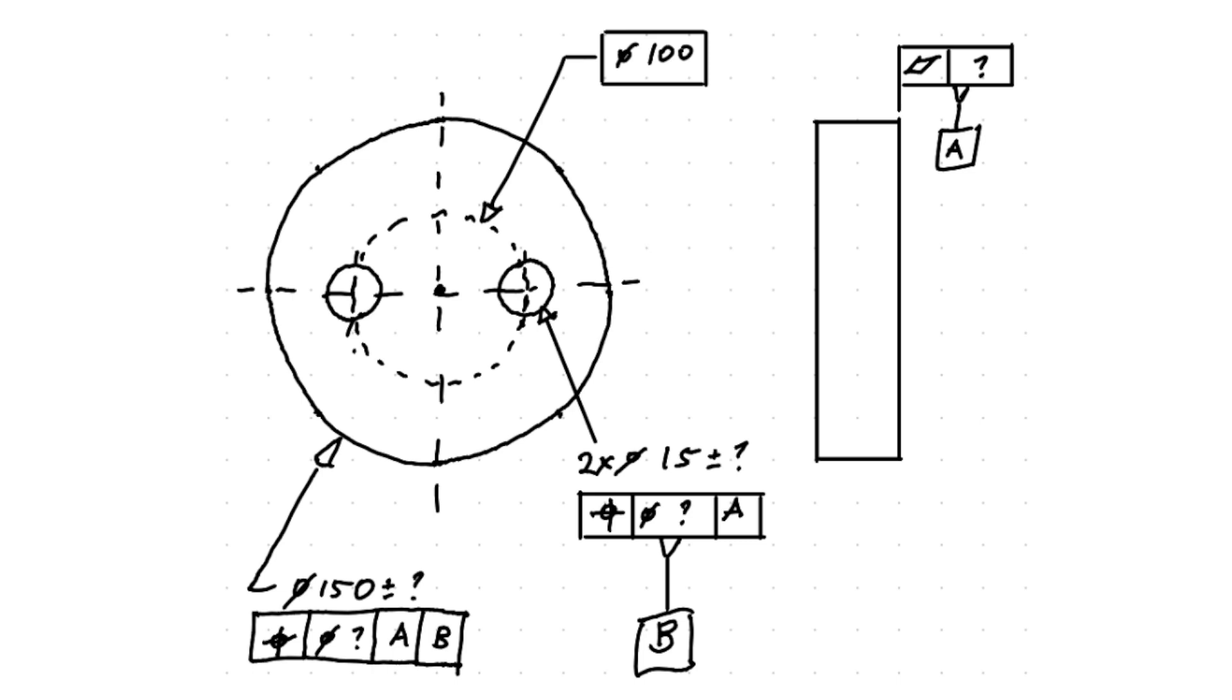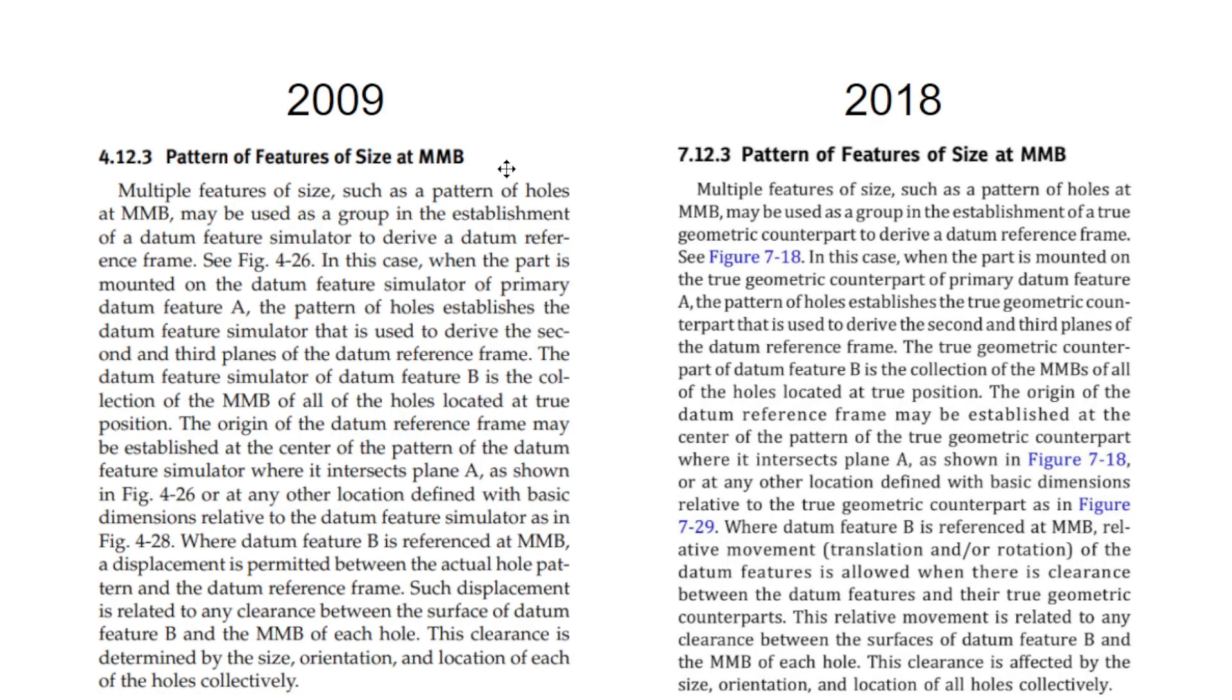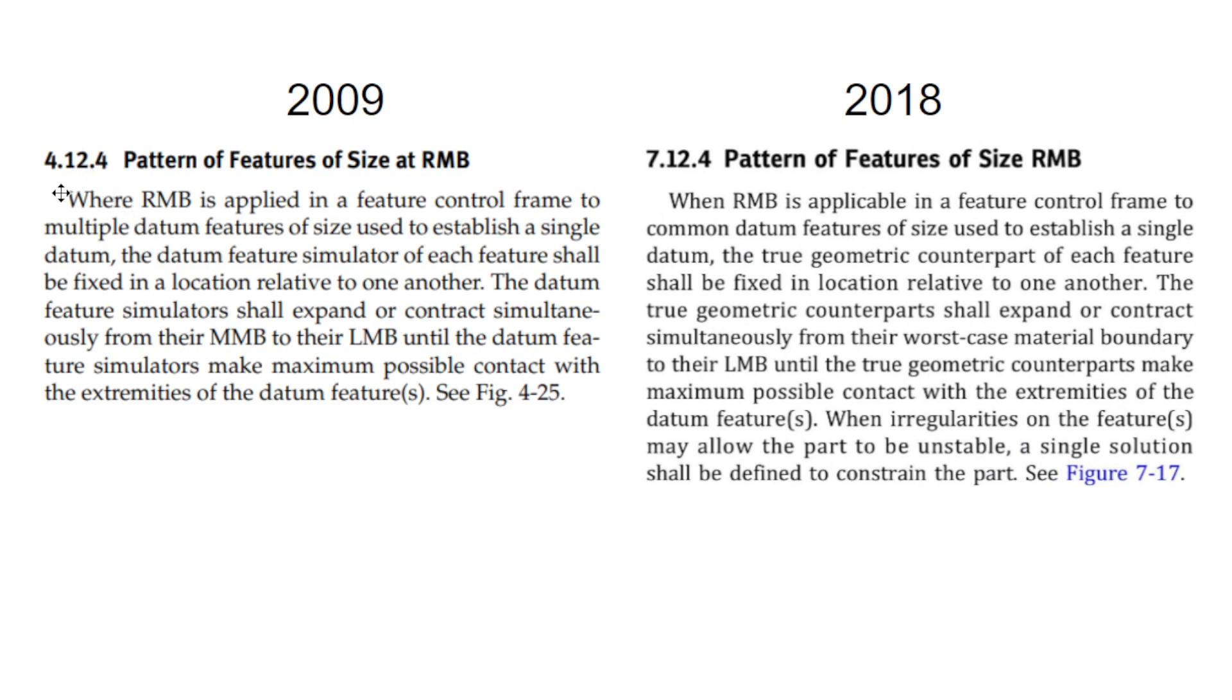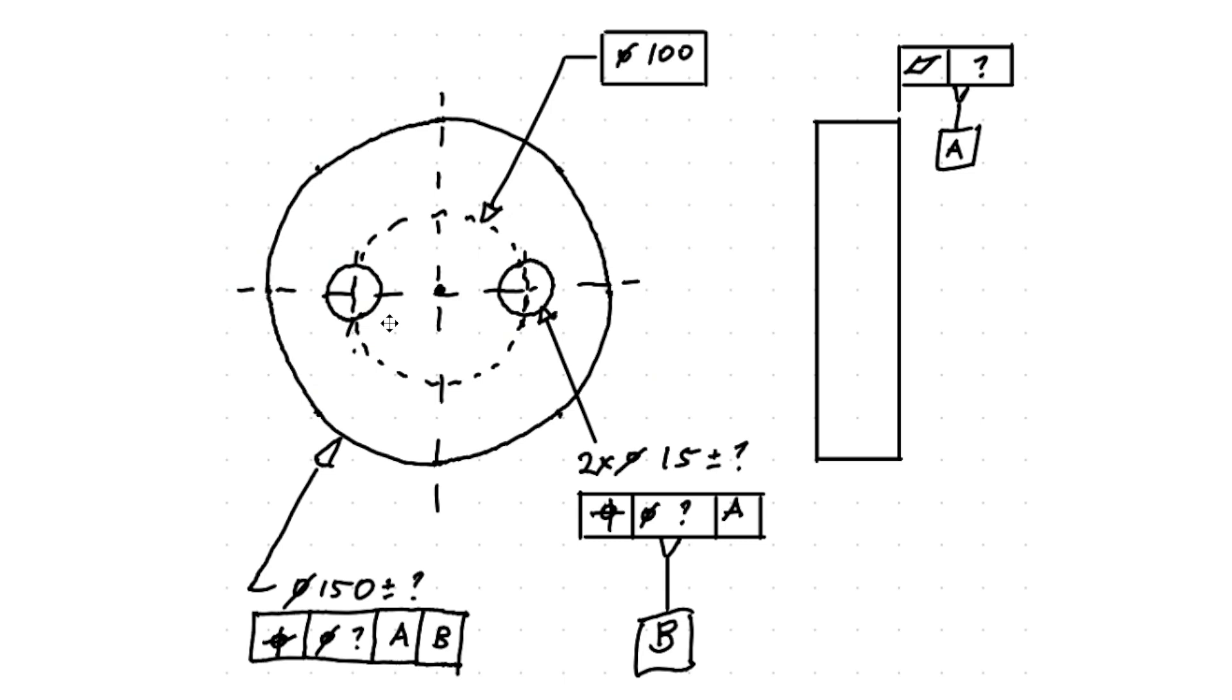When it comes to the RMB situation, the gauge is a little bit different. As people probably know, when you measure something at RMB, the gauge that you're pretending to use or actually using needs to have an expanding or contracting feature on the feature of size that is at RMB. Where people get confused with patterns is they go, okay, what's expanding and how are they expanding? It's pretty obvious when you're looking at a single feature—the collet is contracting around the outside or the pin is expanding on the inside of the feature—but when you add a second pin to the mix, how does that now work?